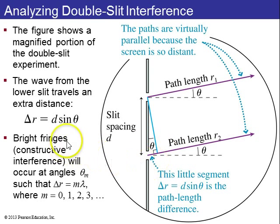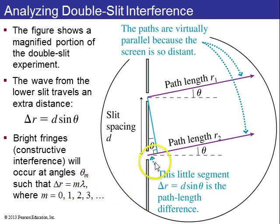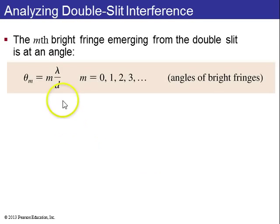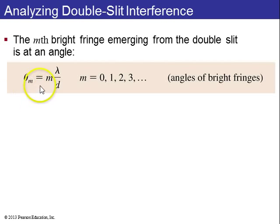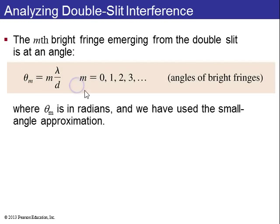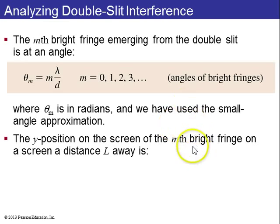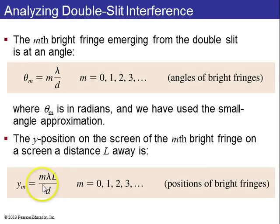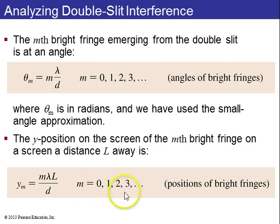You'll have bright fringes — constructive interference — when delta R equals some integer multiple of wavelengths, and destructive when it's half-integer multiples. The angles of the bright fringes satisfy theta equals M times lambda over D, where theta is in radians. This uses the small angle approximation that sine theta is approximately equal to tan theta, which is approximately equal to theta. The Y position on the screen is then Y equals M times lambda times L over D, where L is the distance to the screen and M is an integer 0, 1, 2, 3, etc.